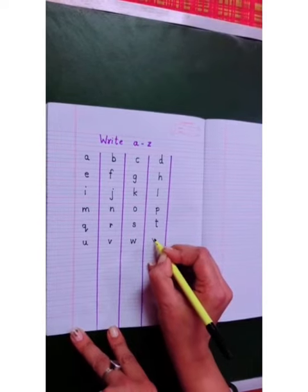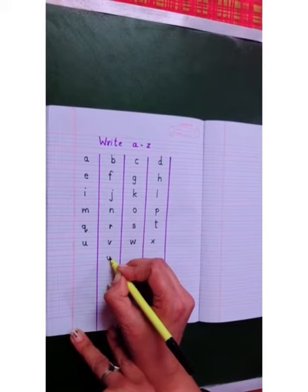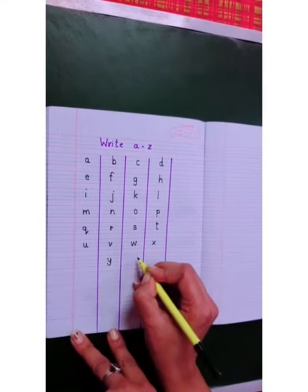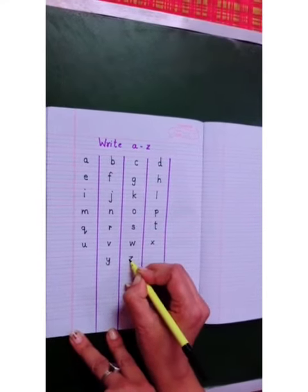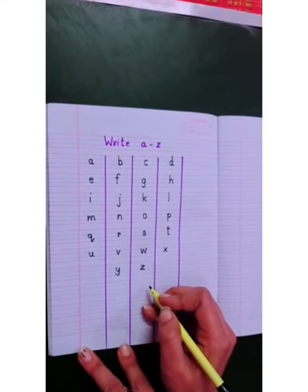Y for yo-yo, z for zebra. So kids, this is alphabet a to z in series.